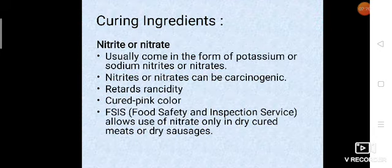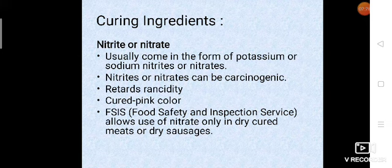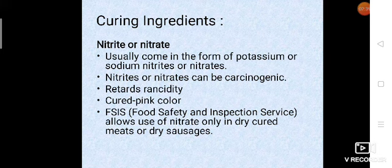Nitrite or nitrate they usually come in the form of potassium or sodium nitrates or nitrites and they help in retarding rancidity and they also cure pink color. Nitrite or nitrates they can be carcinogenic so FSIS food safety and inspection service they have allowed use of nitrite only in dry cured meat or dry sausages and they have also kept some limitation on the use of nitrite or nitrate and residual nitrite they must not exceed 40 ppm parts per million.